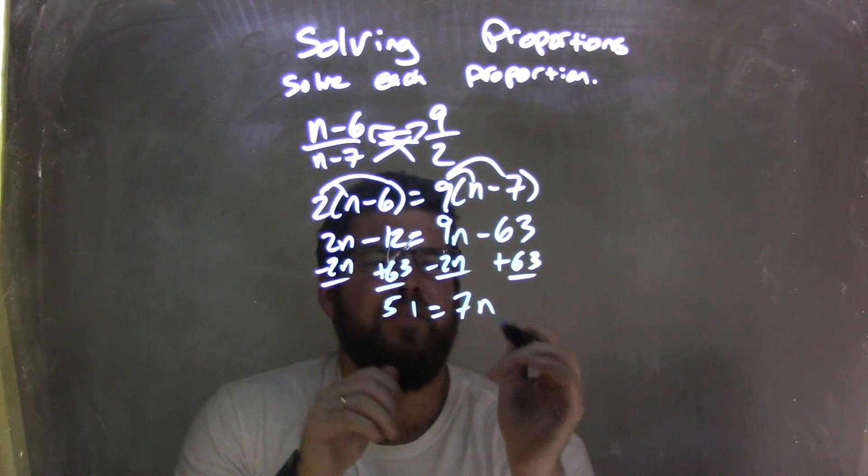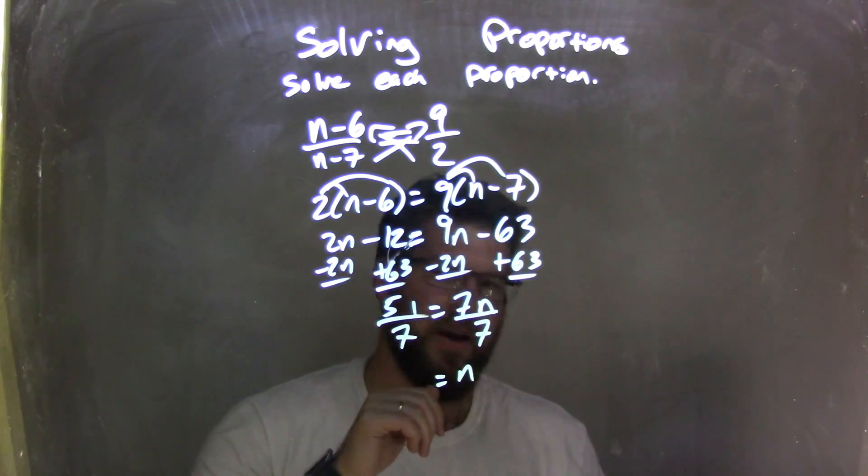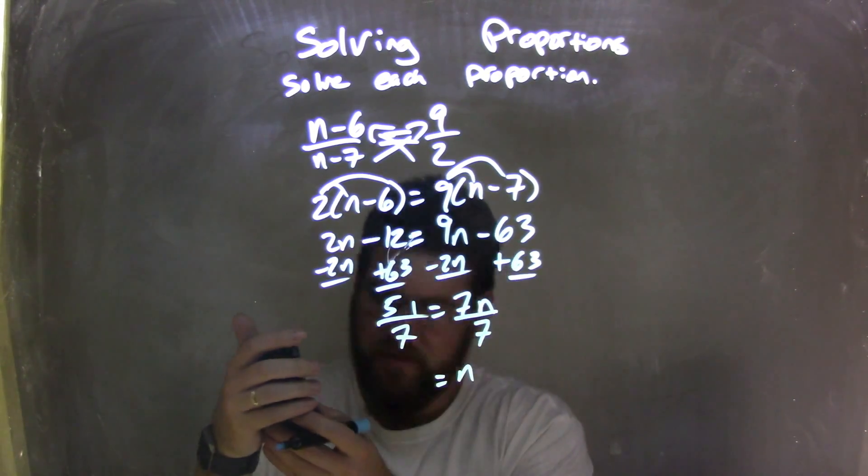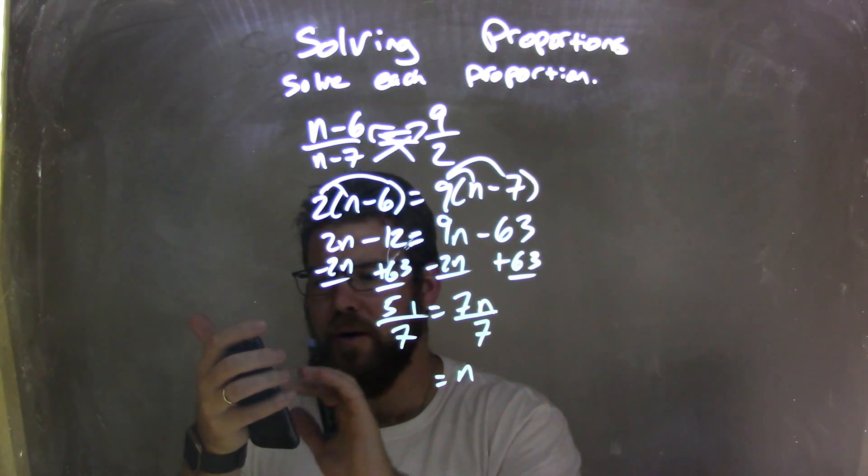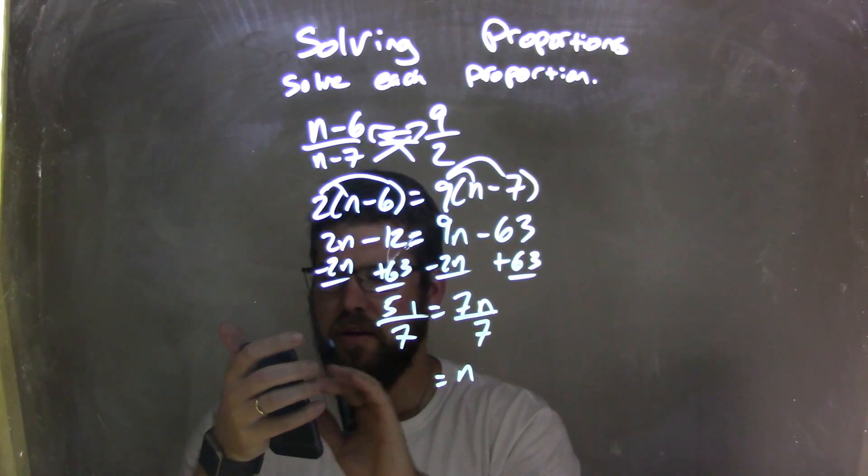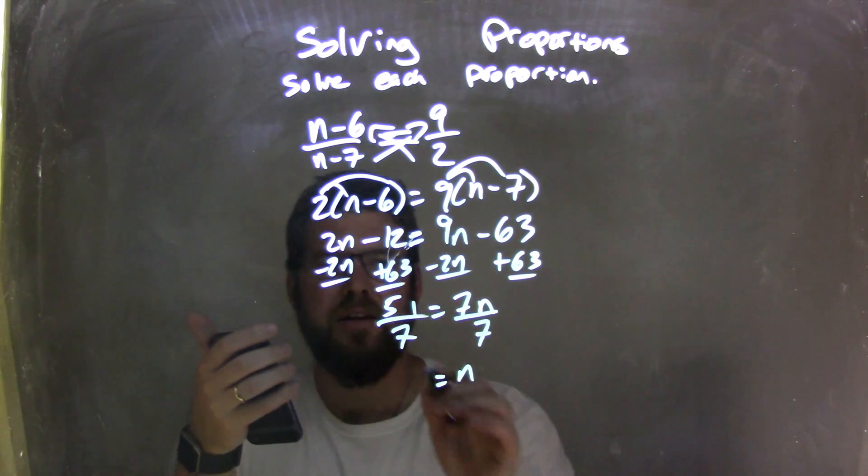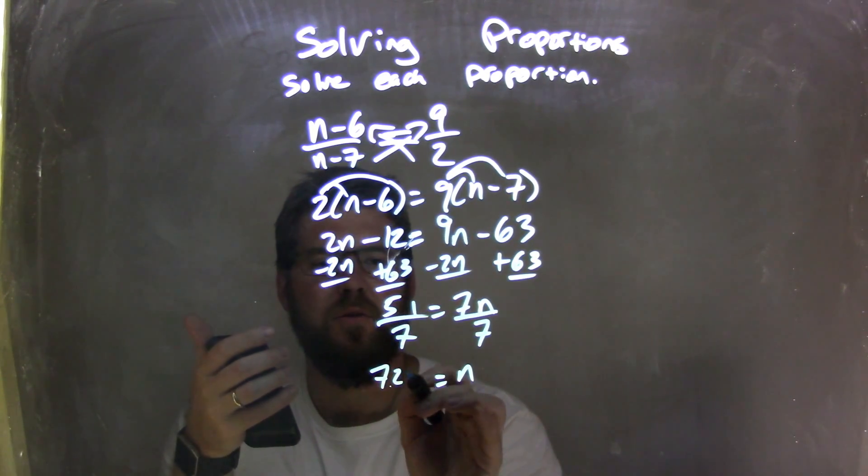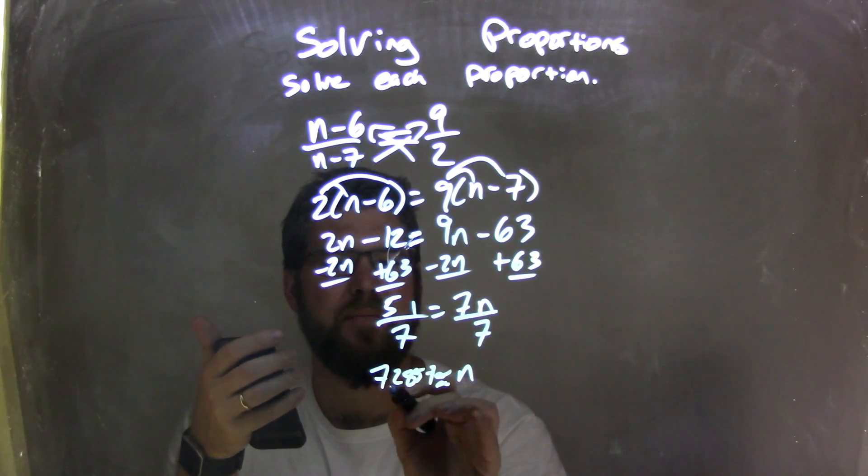Okay, so I'm going to divide by 7 on both sides, giving me n by itself on the right. And what's 51 divided by 7? 51 divided by 7 comes out to be 7.2857, approximately. Yes, correct.